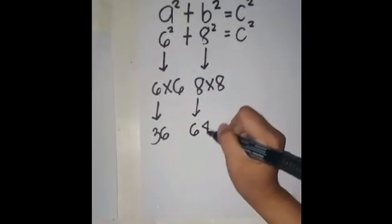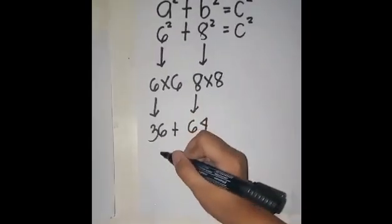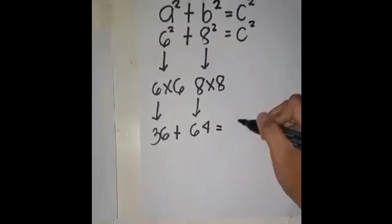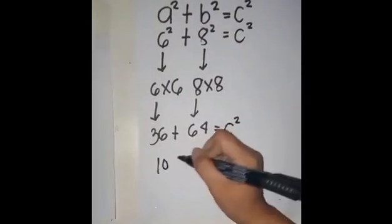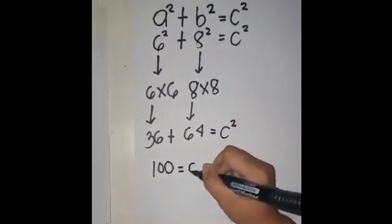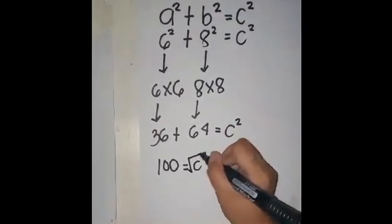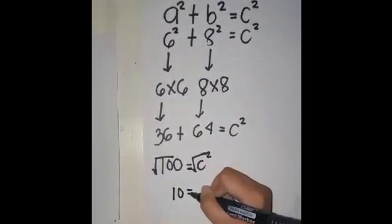Now, to get x by itself, since x is squared, we take the square root of both sides of the equation. So on the right, the square root of x squared is x, and on the left, since 100 is a perfect square, 10 times 10, the square root of 100 is 10. So 10 equals x.